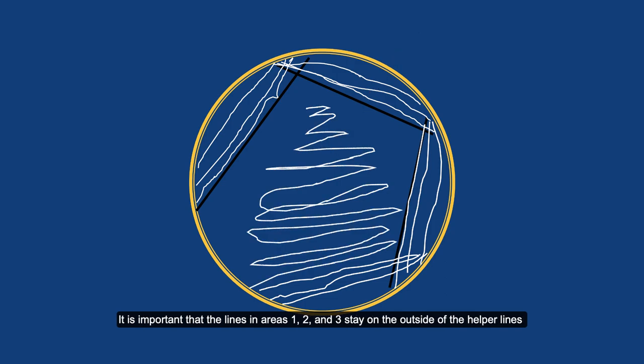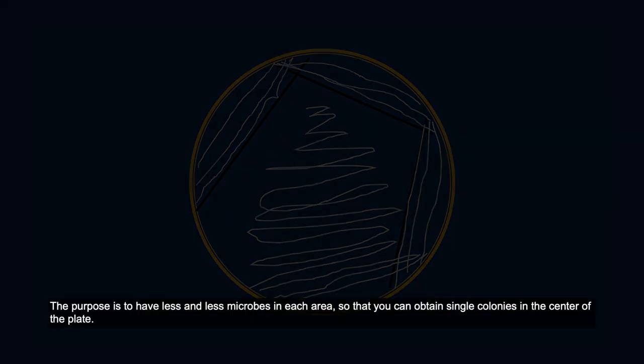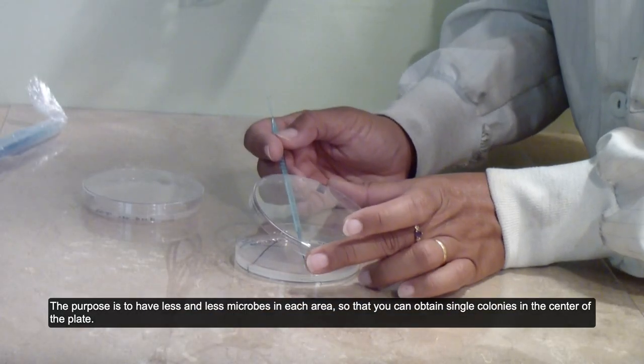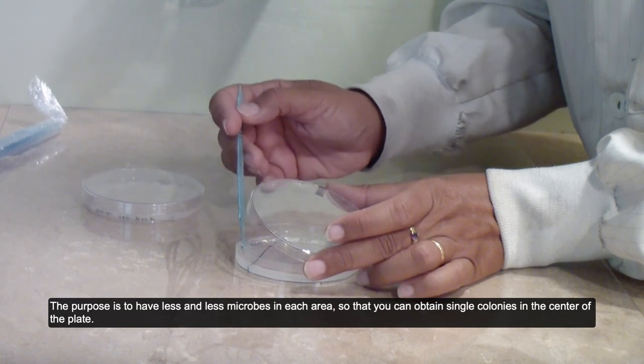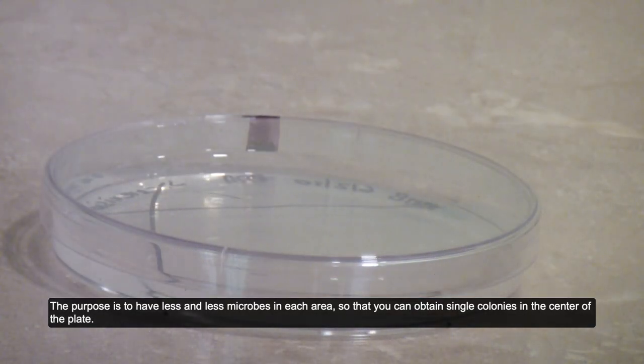It is important that the lines in areas one, two, and three stay on the outside of the helper lines you drew on the plate, and that area four stays on the inside. The purpose is to have less and less microbes in each area so that you can obtain single colonies in the center of the plate.